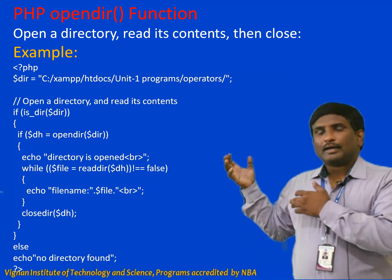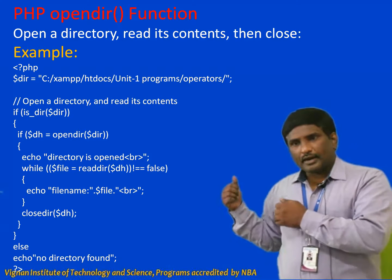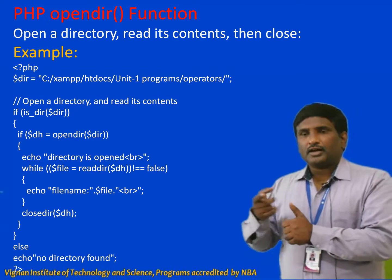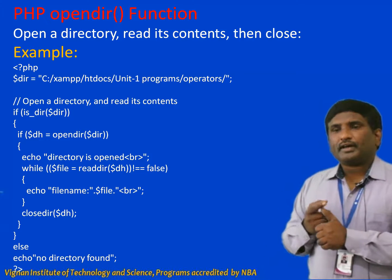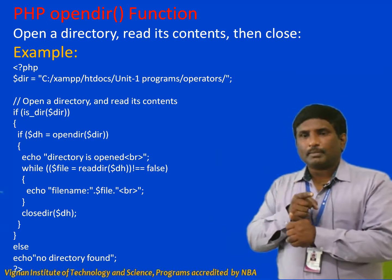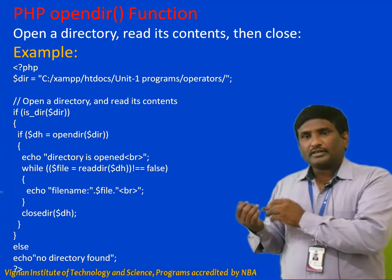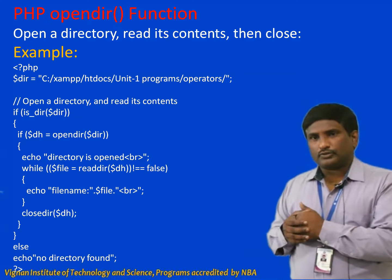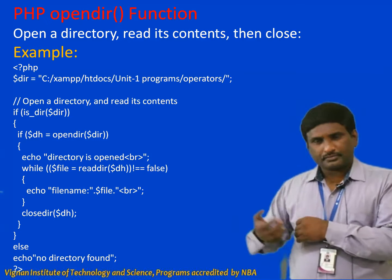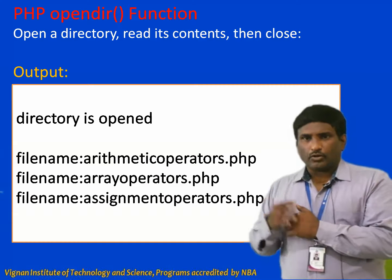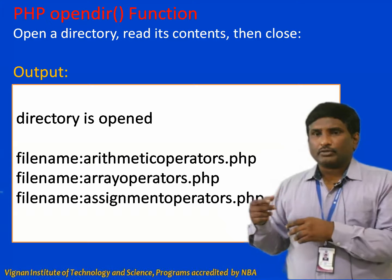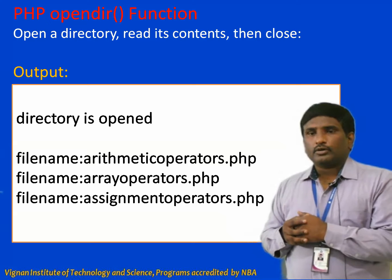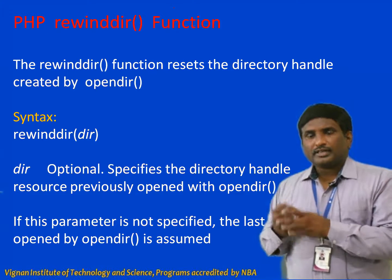To summarize reading content from a directory: first open the directory using opendir(), which returns a handle, then pass that handle to readdir() which returns files one by one — these are printed using echo on the console. The output shows 'directory is opened' followed by all the files available in that directory.